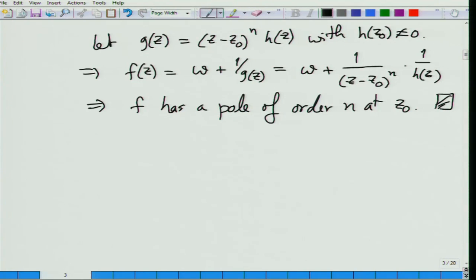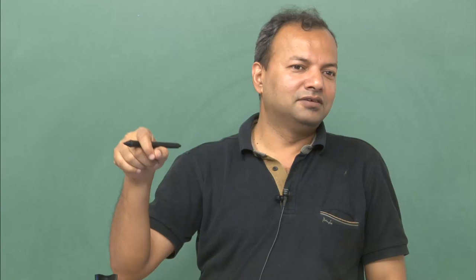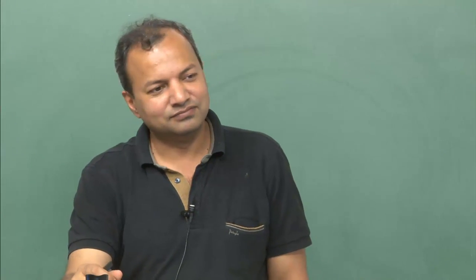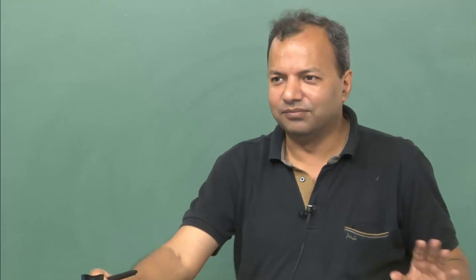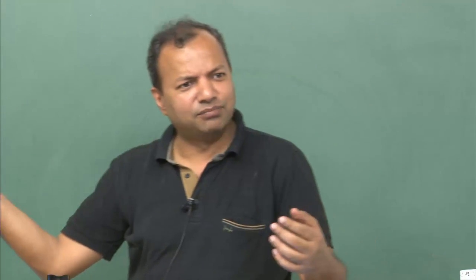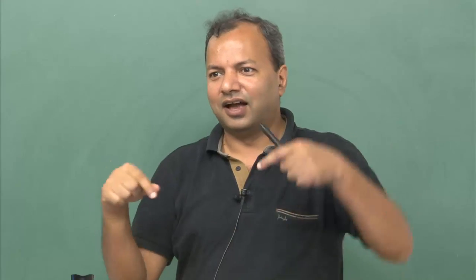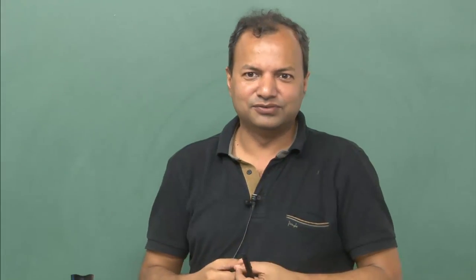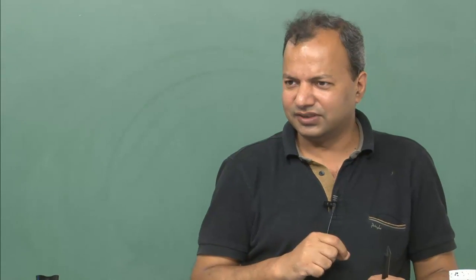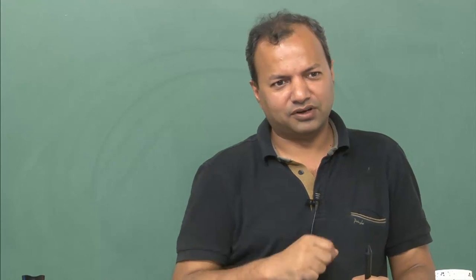So if f has an essential singularity at z naught, it necessarily has the property that as you tend towards z naught you can reach any value you wish — which is completely bizarre and wild behavior. It is kind of hard to visualize, although we did see an example last time: e^(1/z) in two different directions gives two very different values, and in fact you can achieve any value for e^(1/z) by following a particular path.